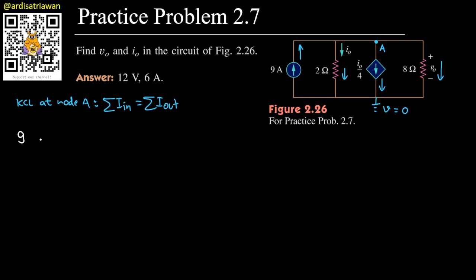The only current that goes in is this 9 ampere, so we just put 9 here, and that will equal to all the currents that go out. So this current here is going out, that is i0, but then this can be solved by using va minus 0 divided by 2. So we'll have va minus 0 divided by 2, plus this one will be i0 over 4, plus this current here. We can calculate it by Ohm's law: va minus 0 divided by 8.